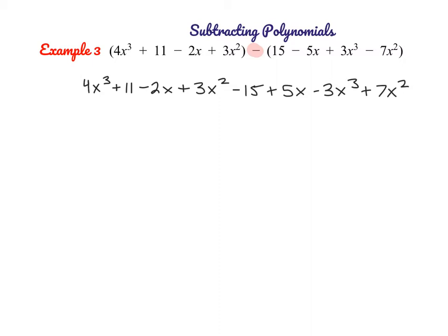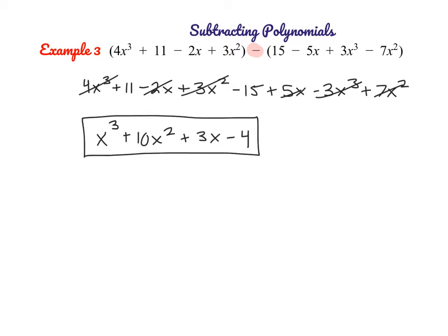From here we're simply combining like terms. Let's start with our x cubed terms: 4x cubed minus 3x cubed gives us 1x cubed. Our x squared terms: 3x squared plus 7x squared gives us 10x squared. Then negative 2x plus 5x gives us 3x. And last, our constant: 11 minus 15 is negative 4.